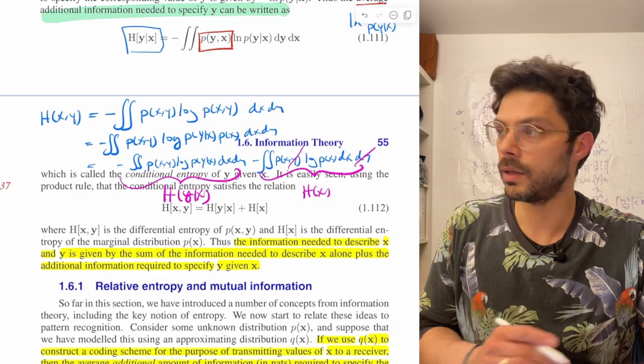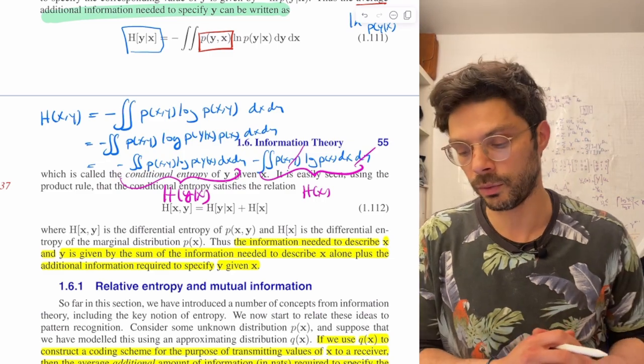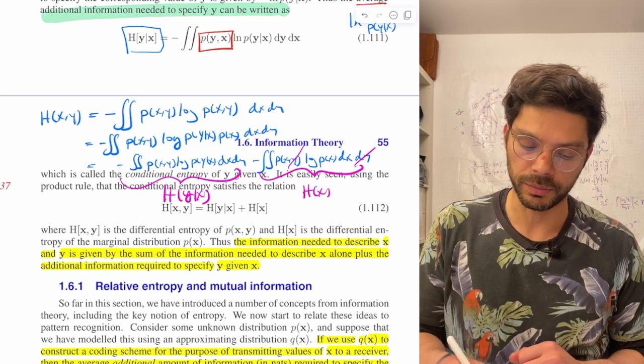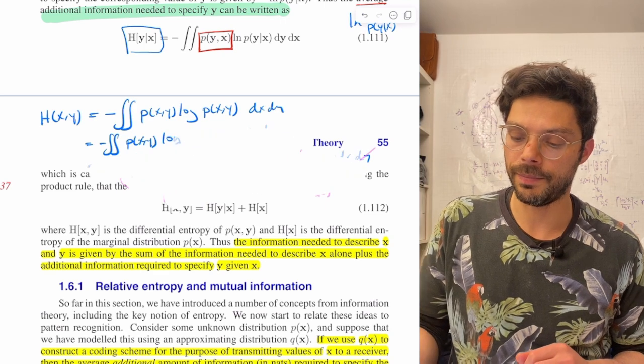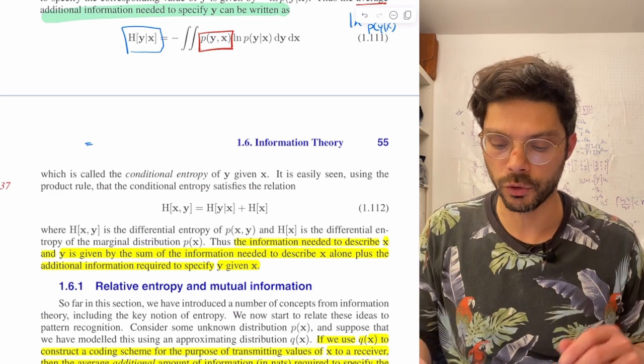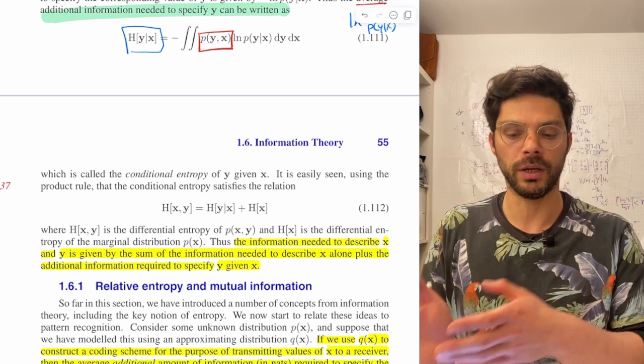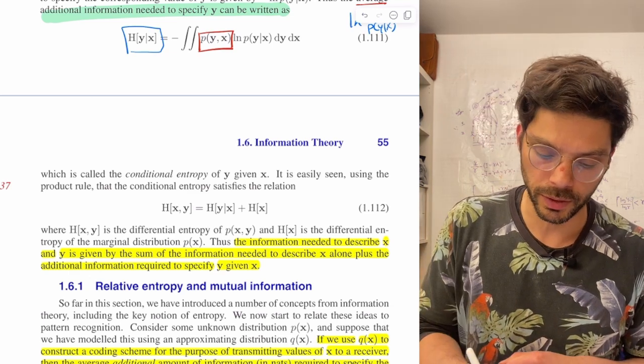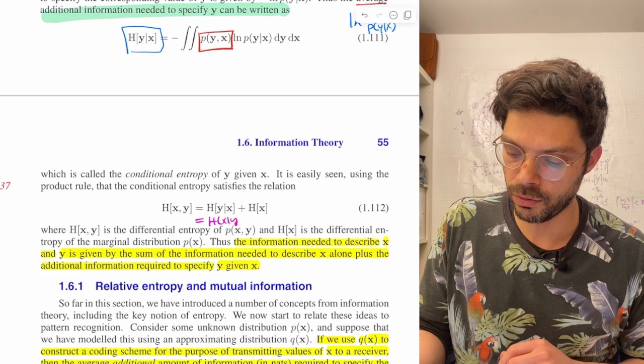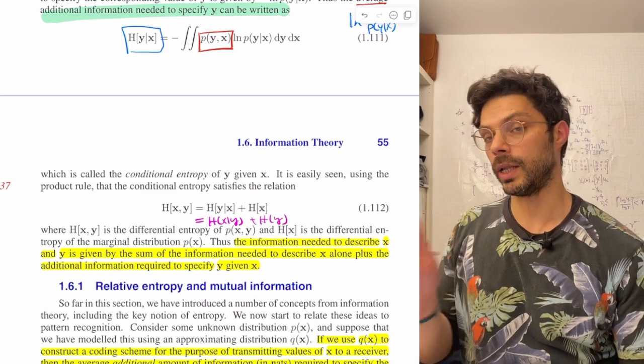So hopefully that was reasonably clear, this is just a couple lines applying the product rule on the joint distribution, and you get the result below. The intuitive result that the amount of information you need to specify two variables jointly is the amount you need to specify one of them, plus the conditional entropy of specifying the other one. One more thing to point out is, you can see this is actually symmetric, right? So it doesn't matter which way you go. And sometimes, in some problems, it can be easier, frequently actually.